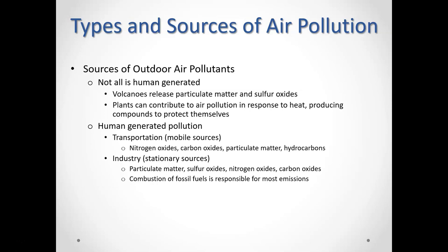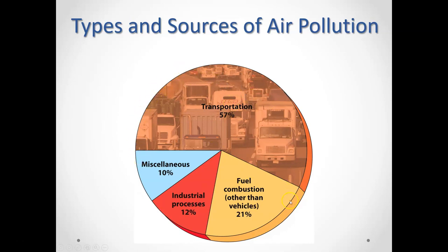Industry is the second largest source of pollutants. In transportation, when we burn gasoline, it releases nitrogen oxides, carbon oxides, particulate matter, and hydrocarbons. Really, if you look at where all of this is coming from, any time you burn something you make air pollutants — burning fuel for transportation, using coal or oil for industrial processes. There's also the category of fuel combustion other than vehicles: things like lawnmowers, gas-powered leaf blowers, snowmobiles — anything using a combustion engine is producing pollution.